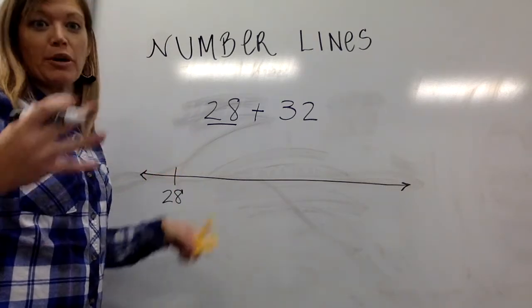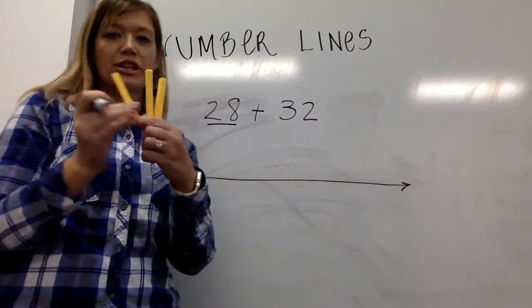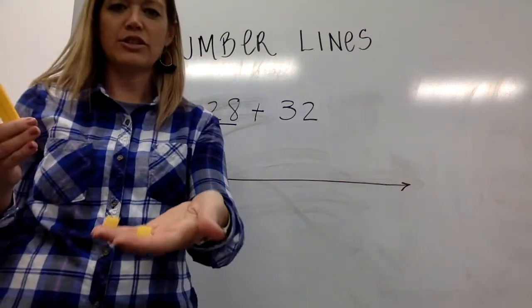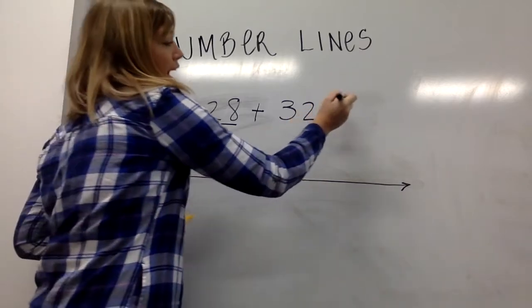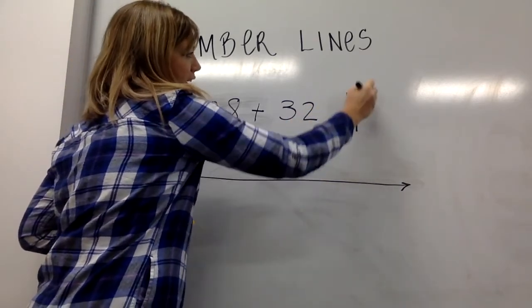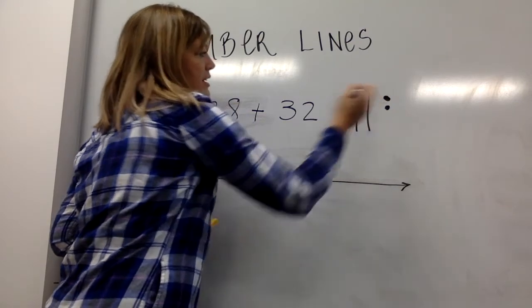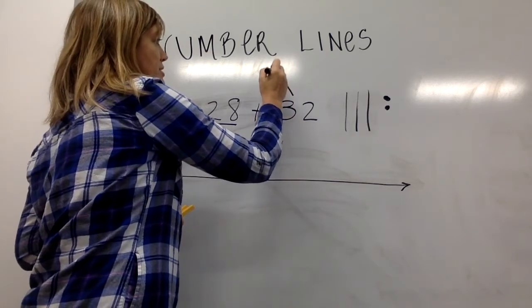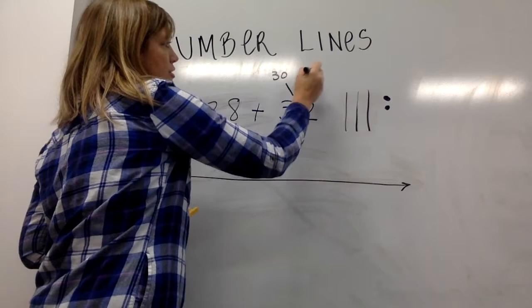So I might think of 32 as three tens and two ones. I can represent that pictorially as three tens and two ones. We might also have students that can think about it numerically as 32 is 30 and 2.